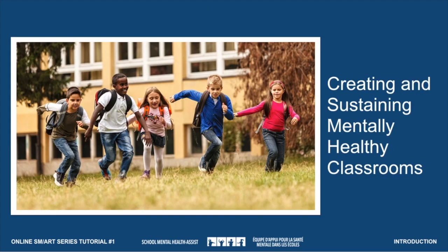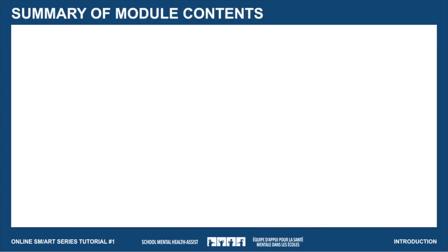Welcome to the Creating and Sustaining Mentally Healthy Classrooms tutorial. You may want to watch the tutorial all at once, or you may prefer to watch it section by section — the choice is yours. Each section will take about 10 minutes to complete. There are also some links, handouts, and videos that you may wish to access as part of your learning. Here is a clickable summary of the contents, which allows you the flexibility to navigate to a specific section. At any time during the tutorial, you can click the home button at the top right of your screen to return to the summary page. You can also advance, pause, or go back and forth among the slides with your mouse or cursor at your own pace.